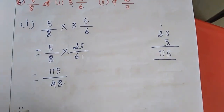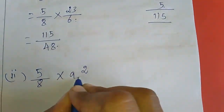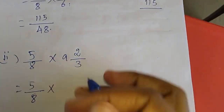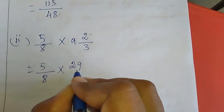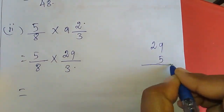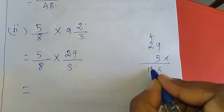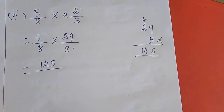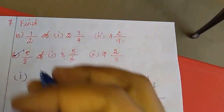Second is 5 by 8 of 9 and 2 by 3. The mixed fraction 9 and 2 by 3 — I am changing it: 3×9 is 27, plus 2 is 29. So 29 by 3. Now 29 into 5: 5×9 is 45, carry 4; 5×2 is 10, plus 4 is 14. So 145 divided by 24. That is all — the a sum is complete.